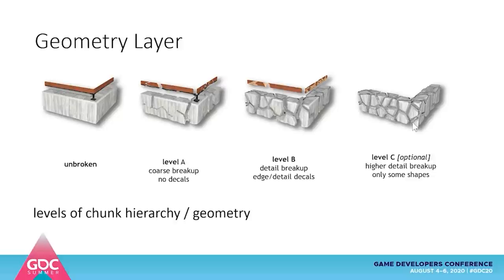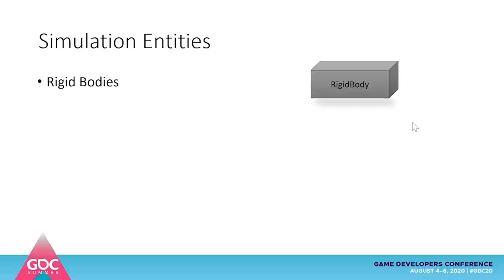The first part is the geometry layer. We have a piece of railing made of concrete at the bottom, metal in the middle, and wood on top. From left to right you see a hierarchy of how that breaks: Level A breaks the concrete — no decals because you don't want to see all the cracks — wood goes into longer splintery pieces, metal bends. Level B — metal doesn't break further but wood and concrete do. Level C, optional depending on material, breaks even further. You're not breaking all parts at once — you shoot a specific corner, that's where it breaks.